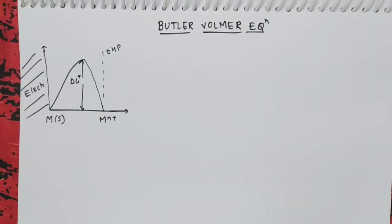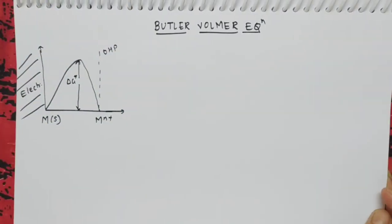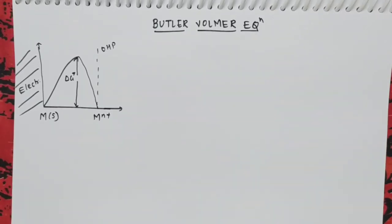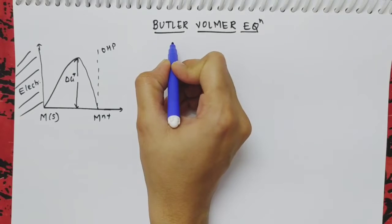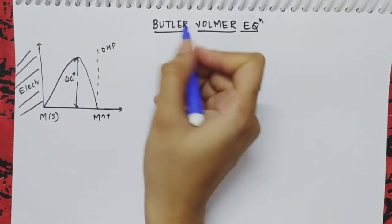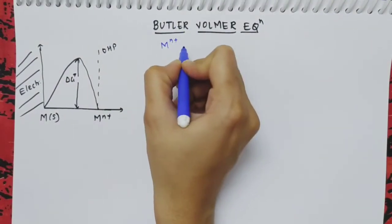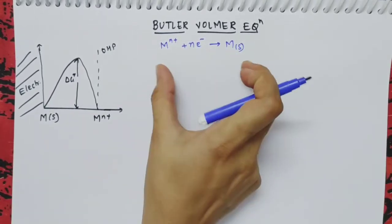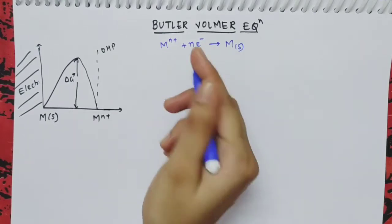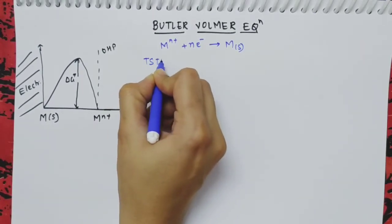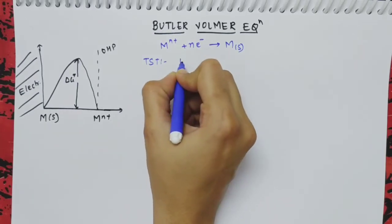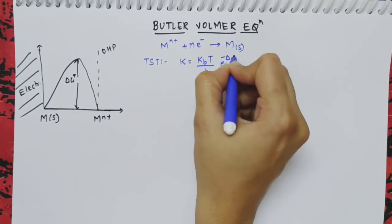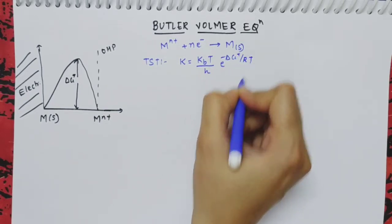Now let's consider the derivation of the Butler-Volmer Equation. We consider a general reaction, whether it is oxidation or reduction. Let's consider the reaction of metal with N number of electrons, which is a reduction reaction. From transition state theory, the rate constant is k = (kbT/h) × e^(−ΔG*/RT).